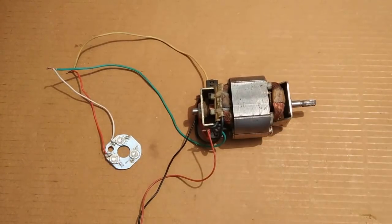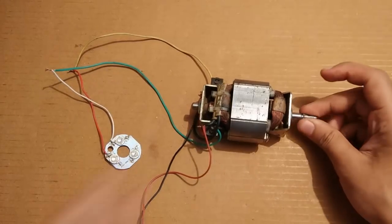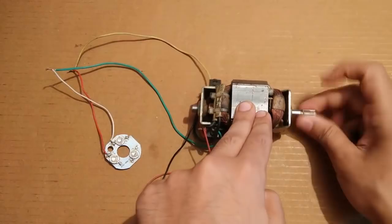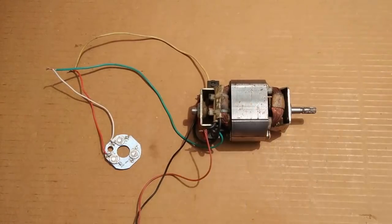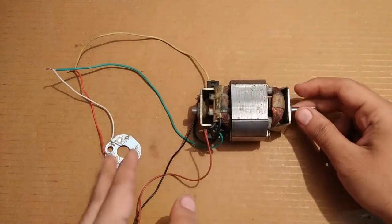Now I am going to switch on the supply and when I will turn the shaft it should rotate. You can see that at present it is not glowing. There is no light. Now I have switched on the supply. Now when I will rotate it, it will start glowing.